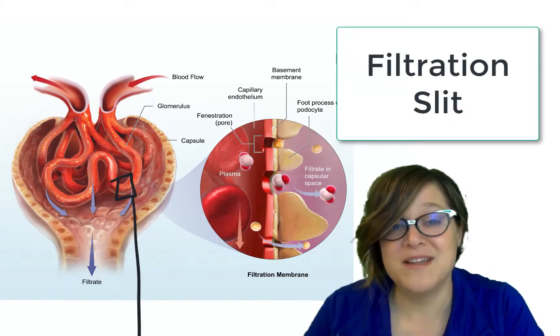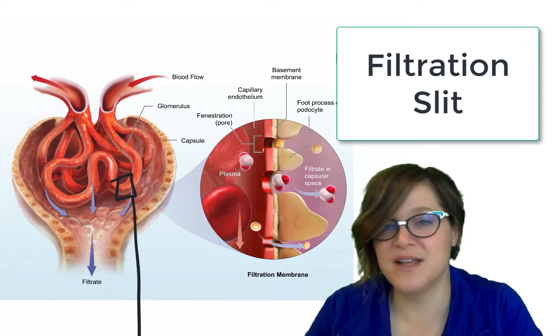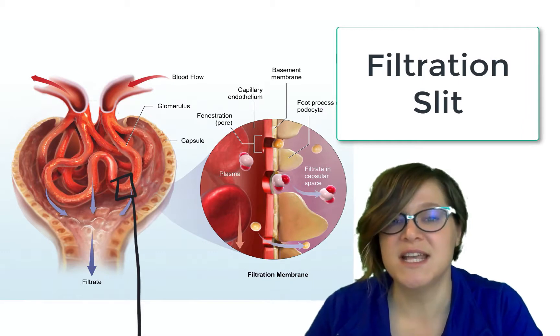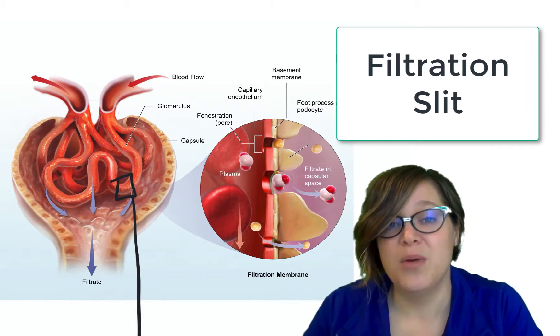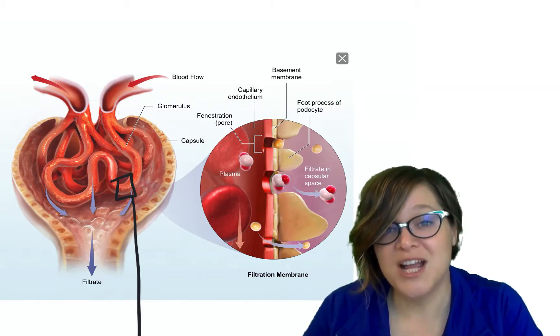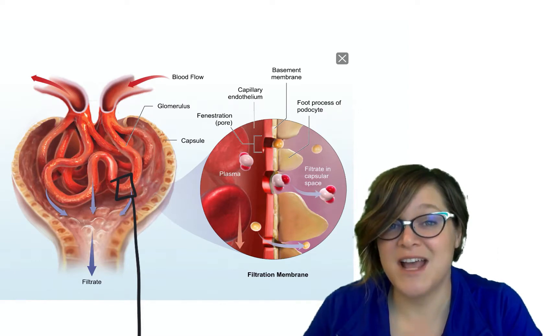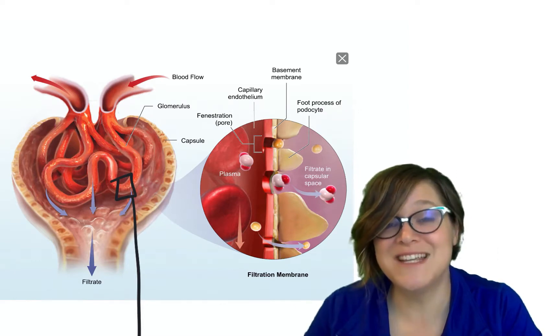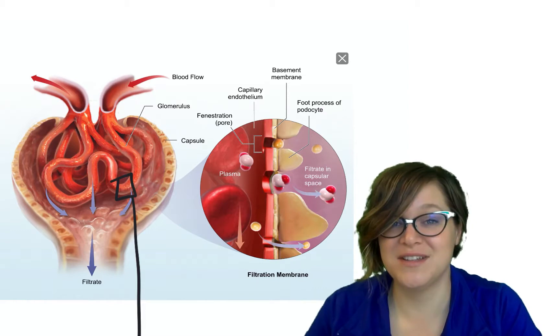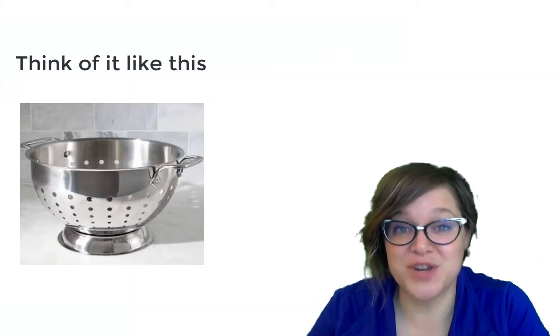Basically, because of all of these structures, big things can't get into the urine. So blood cells, large proteins, can't get into the urine. But water and electrolytes and smaller molecules can get into the urine. And this is how that glomerulus does filtration.